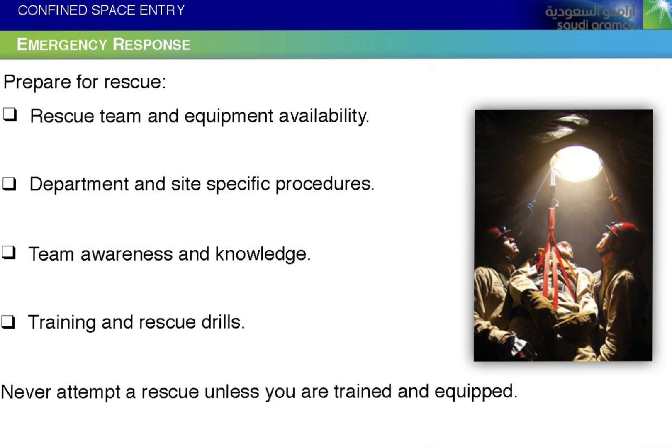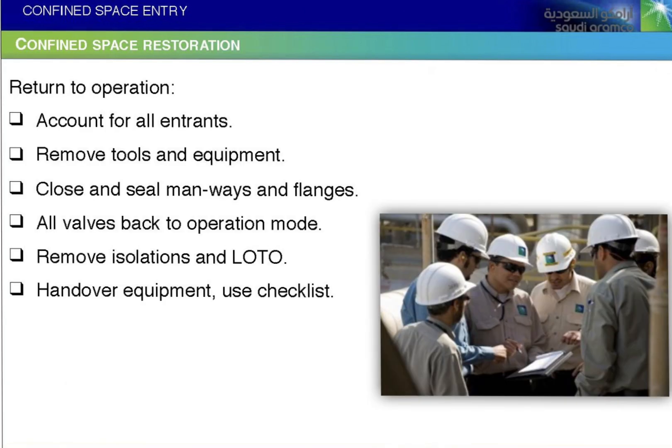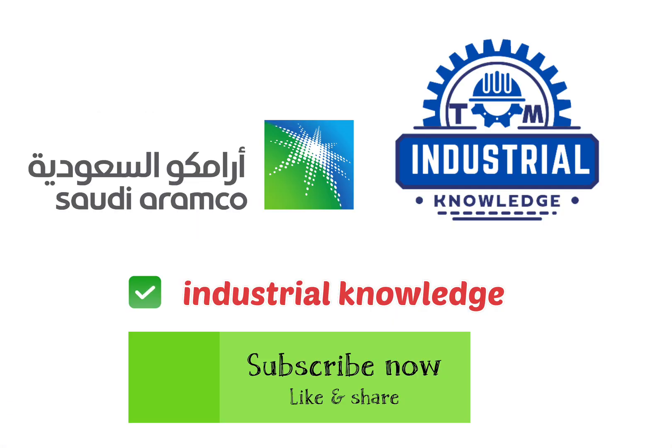Return to operation: account for all entrants; remove all tools and equipment; close and seal manways and flanges; return all valves to operation mode; remove isolations and LOTO; hand over equipment. Thanks for watching this video — subscribe to Industrial Knowledge for more learning videos.